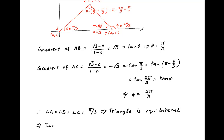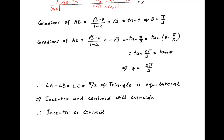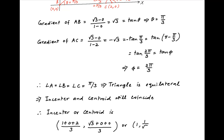In an equilateral triangle, the incenter and the centroid coincide. Therefore, the coordinates of the incenter are the sum of the x-coordinates divided by 3, which is (1 + 0 + 2)/3, and the sum of the y-coordinates divided by 3, which is (√3 + 0 + 0)/3. This simplifies to (1, 1/√3), which is the required answer.